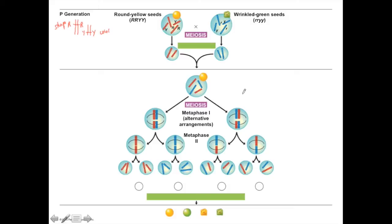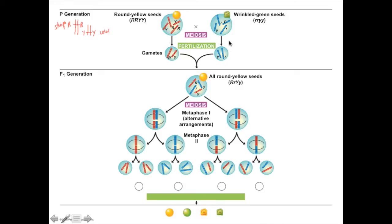You produce gametes in order to get to fertilization. The only gametes you can produce from the first individual are the ones that carry the capital letters, and the only ones from the second individual carry the small letters. Fertilization produces the first generation offspring, and here you have all round yellow seeds — because we have the big R that makes them round, and the big Y that makes them yellow.